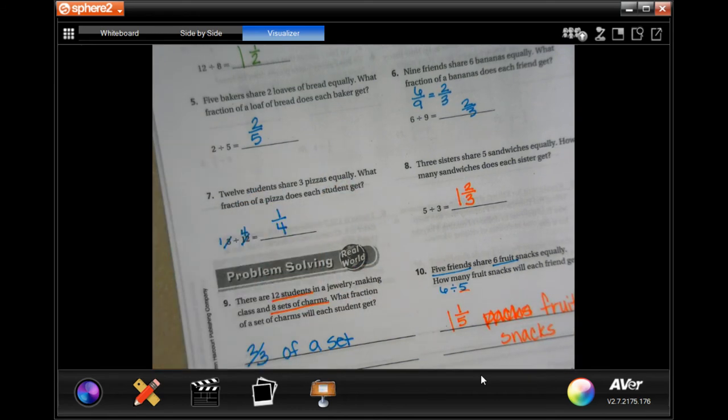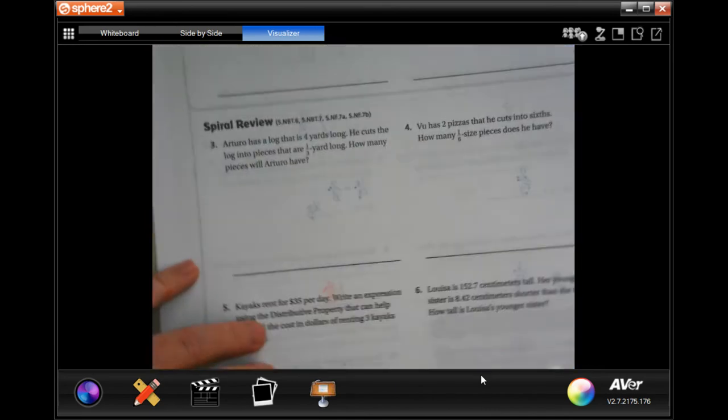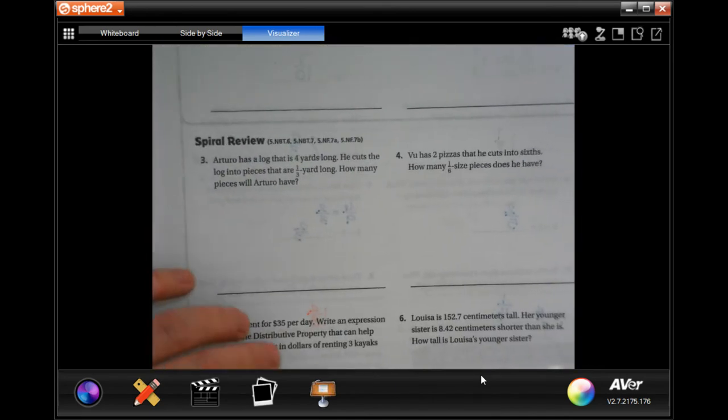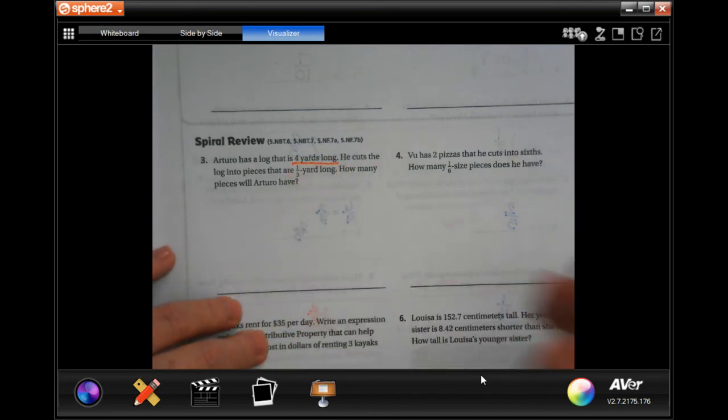Sorry, I'm going to do the whole front side with you guys. We're going to go down and do this review. It says Arturo has a log that is four yards long. He cuts the log into pieces that are one third yard long. How many pieces will Arturo have?